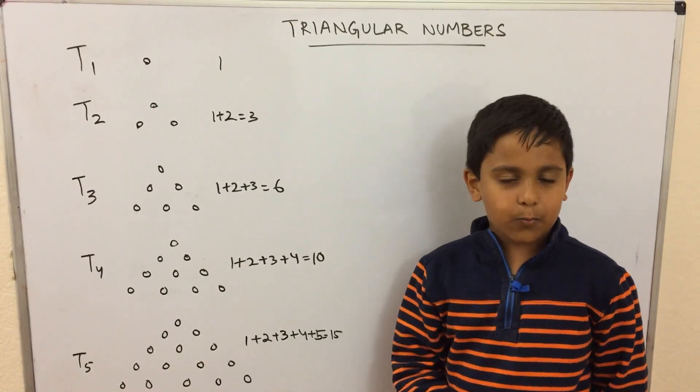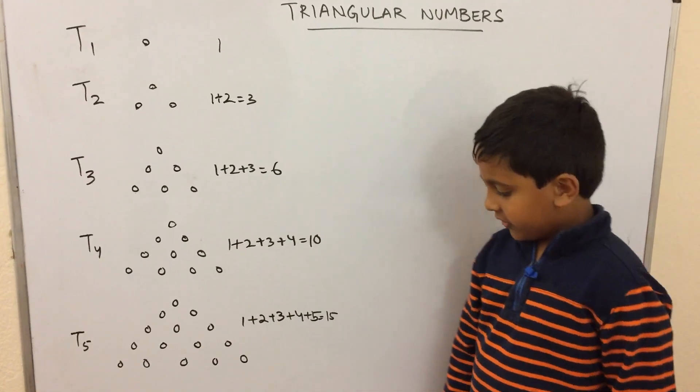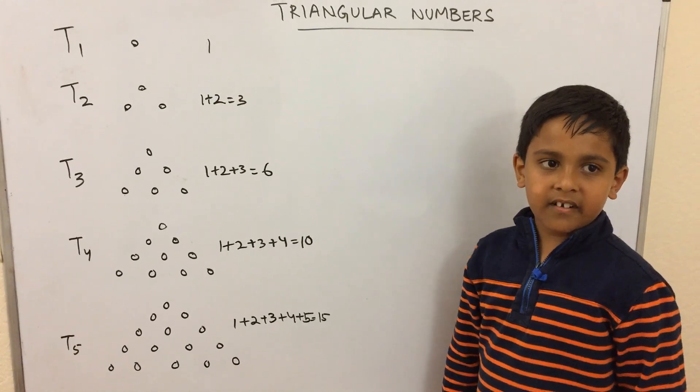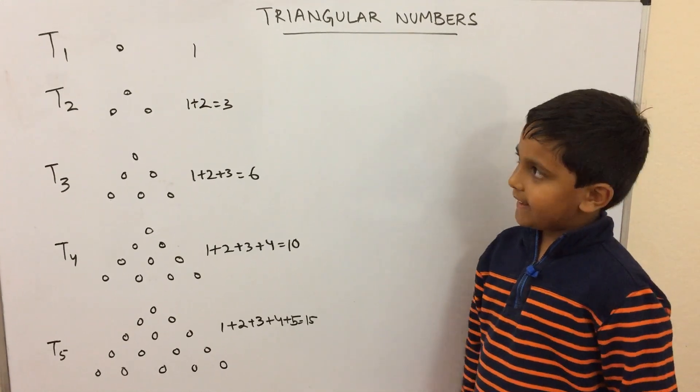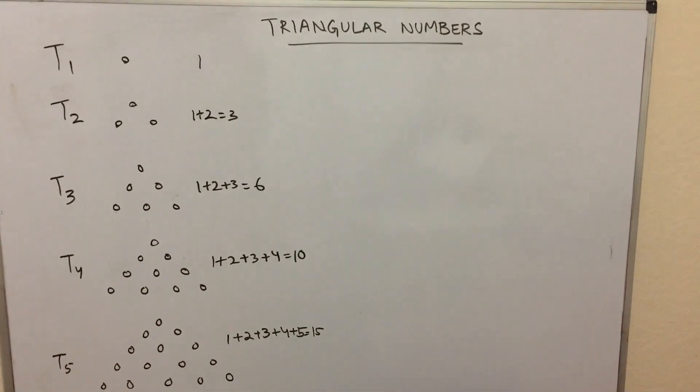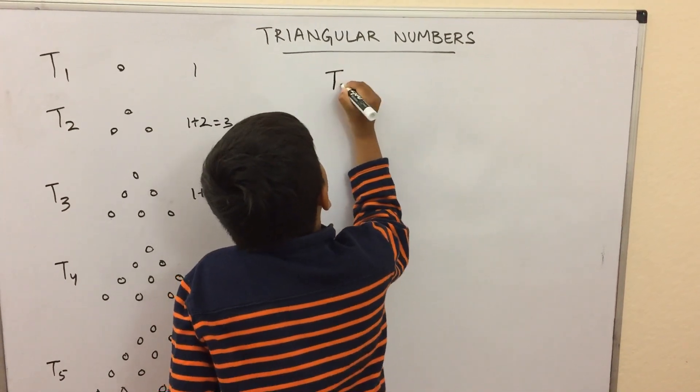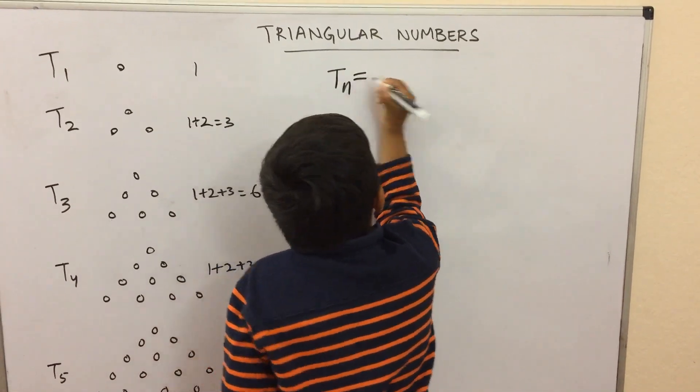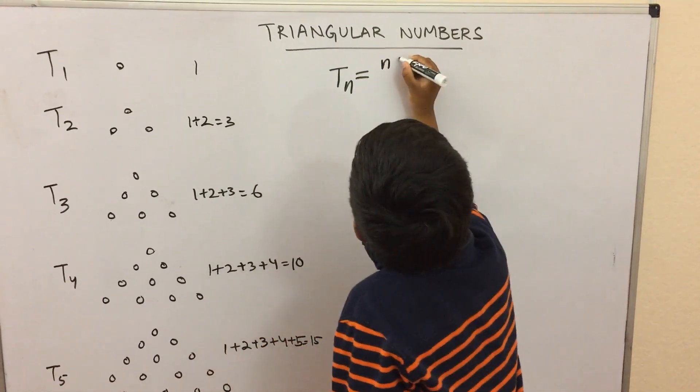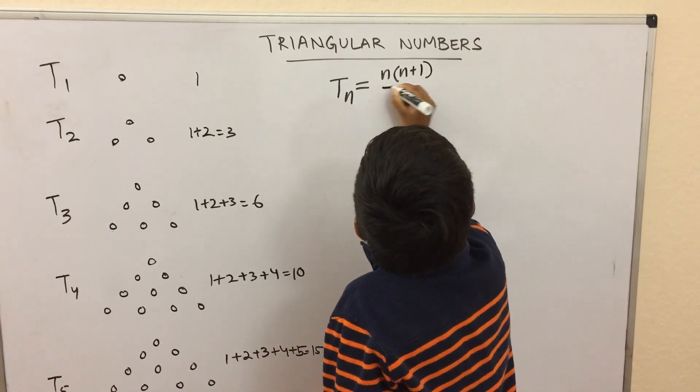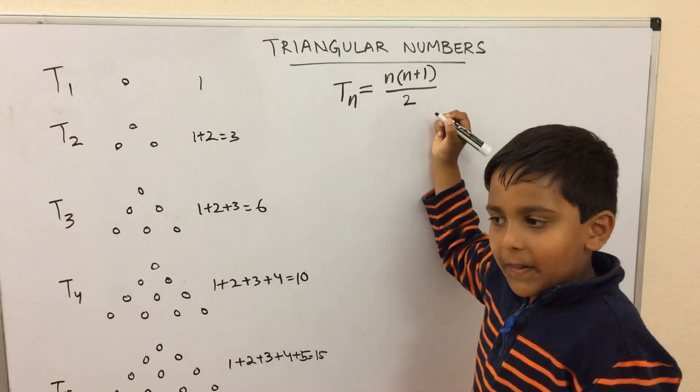That's the way triangular numbers are represented. So Carl Gauss made up a formula to calculate triangular numbers. I'll write it down. So the nth triangular number equals n times n plus 1 whole over 2. That's the formula.